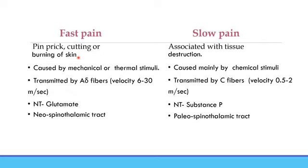Fast pain is produced by pinprick, cutting, or burning of skin, and is caused by mechanical or thermal stimuli. Slow pain is associated with tissue destruction and is caused mainly by chemical stimuli. Fast pain is transmitted by A-delta fibers with a velocity of 6 to 30 meters per second; slow pain is transmitted by C-fibers with a velocity of 0.5 to 2 meters per second. The neurotransmitter for fast pain is glutamate, and for slow pain it is substance P. The pathway for fast pain is the neospinothalamic tract, and for slow pain it is the paleospinothalamic tract. Remember: fast pain by A-delta, slow pain by C-fibers.